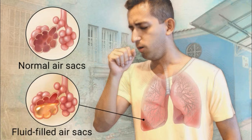Pneumonia is a form of acute respiratory infection that affects the lungs. The lungs are made up of small sacs called alveoli, which fill with air when a healthy person breathes. When an individual has pneumonia, the alveoli are filled with pus and fluid, which makes breathing painful and limits oxygen intake.